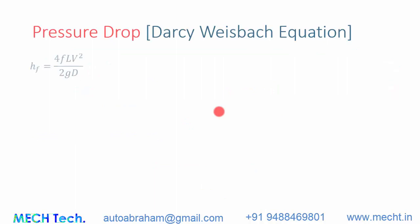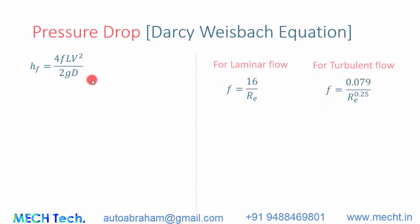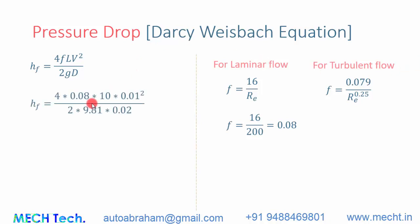First we use the conventional Darcy-Weisbach equation: hf = 4fLv²/(2gD), where hf is the head loss, f is the coefficient of friction, L is the length, v is the velocity, and D is the diameter. For laminar flow, the coefficient of friction f = 16/Re = 16/200 = 0.08.